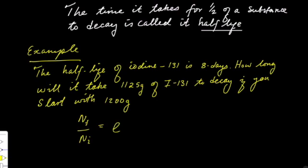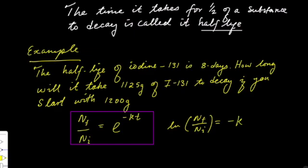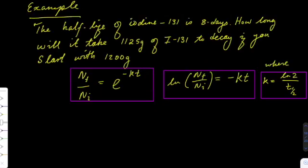The ratio of the final amount to the initial amount is the exponential of a constant multiplied by the time it takes the decay to occur, where k is ln 2 over the half-life.